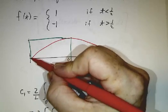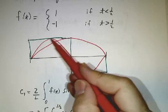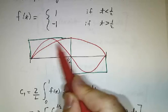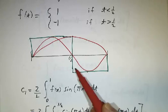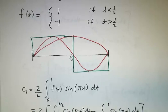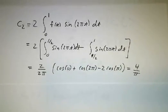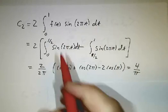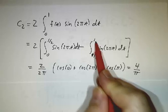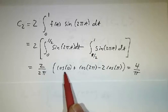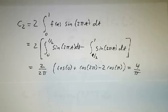c₂ should give us something. Our second basis function is sin(2πt), and where the square wave is positive, sin(2πt) is also positive; where the function is negative, sin(2πt) is also negative. So that inner product is bound to be nonzero. Computing c₂, we integrate f(t) sin(2πt) dt, splitting into [0, 1/2] and [1/2, 1]. We get (2/2π)[cos(0) + cos(2π) − 2cos(π)], which gives 4/π (or 8/2π).